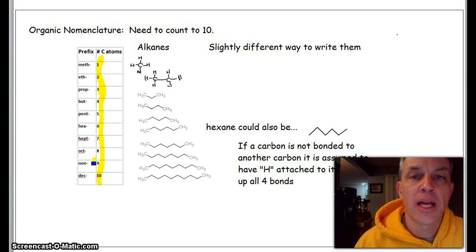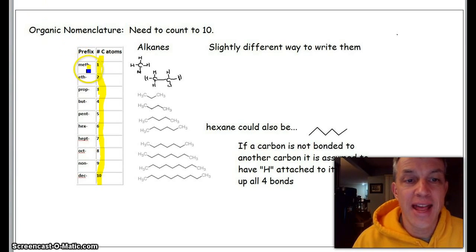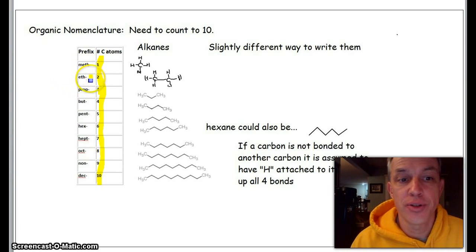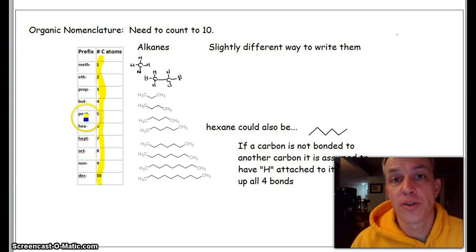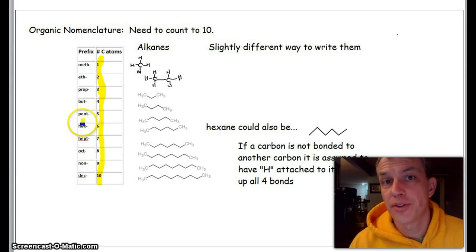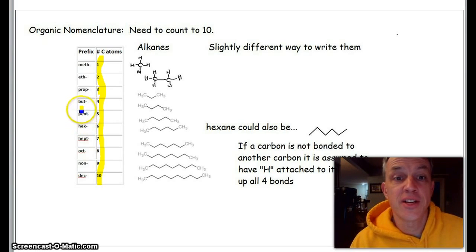If this right here ends in -ane, like methane, butane, ethane, propane, pentane, that means there are that many carbons bonded to each other. To have four bonds on each carbon, H's make them up—like methane, one carbon with a bunch of H's around it.